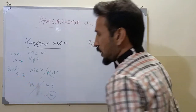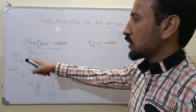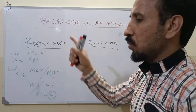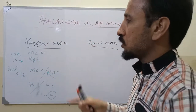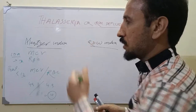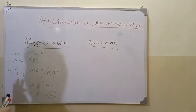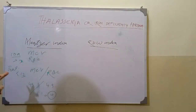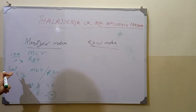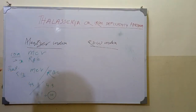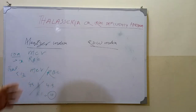In thalassemia, the Mentzer Index is almost always less than 13. A Mentzer Index of more than 13 is almost always typical for iron deficiency anemia, while a Mentzer Index of less than 13 is almost always typical for thalassemia.